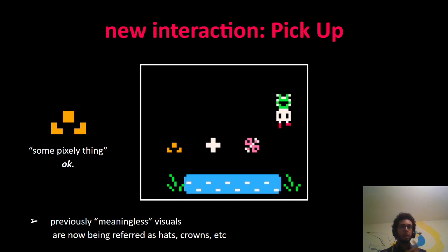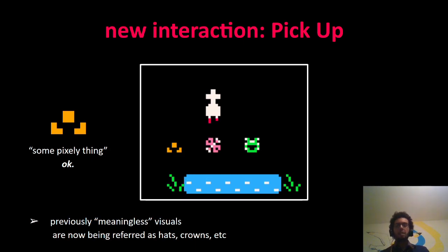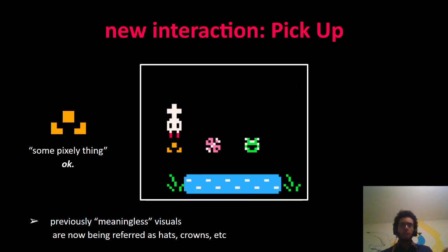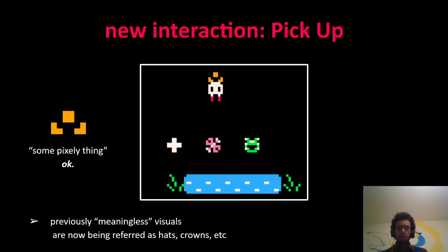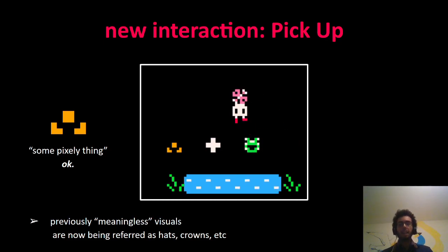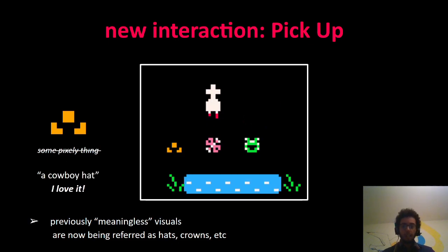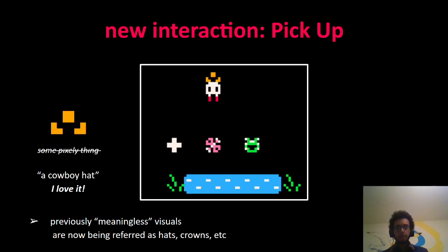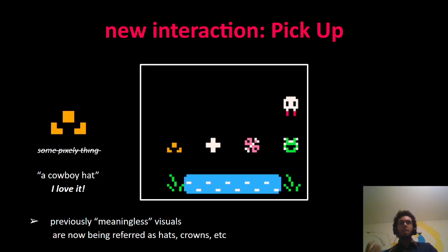But they can also be influenced by the game. Here's an example: when I designed the game, I added a new interaction — picking up something. Since the character has no arms whatsoever, they just put the object on their head. Suddenly, flowers that had no meaning before started being seen as hats by players. This orange thing became a cowboy hat, and suddenly it became the favorite flower of a player. Interaction can help meaningless visuals become something with dear meaning to the player.